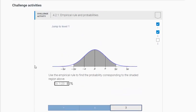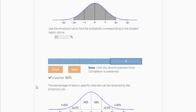And let's find this next one. So use the empirical rule to find the probability corresponding to the shaded region. So here you'll notice it's between negative two sigmas and two sigmas here. So this is between two standard deviations below the mean and two standard deviations above the mean. Well, that's the same thing as the first problem we did. It should be 95%, which is what we got.